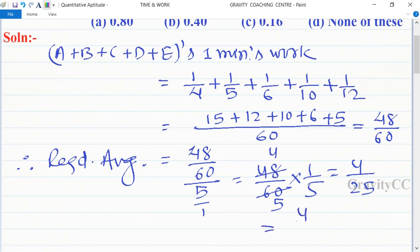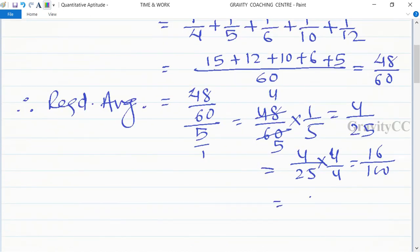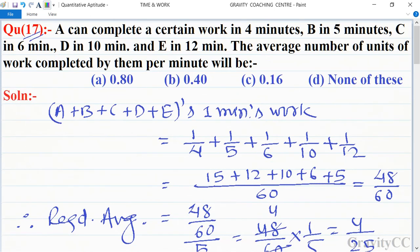So is equal to 4 upon 25 into 4 upon 4, is equal to 16 upon 100. So is equal to 0.16, which is the required answer. So option C is the correct answer.